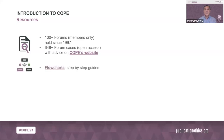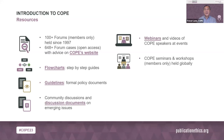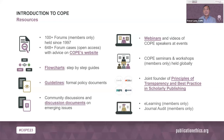Other web resources include flowcharts to handle cases, guidelines and discussion papers, and recordings of COPE speakers and members-only meetings. COPE is a joint founder of the principles of transparency and best practice in scholarly publishing. For members, we have an e-learning course and a journal audit. The website is publicationethics.org and for social media, the hashtag for this seminar is hashtag c0pe23.